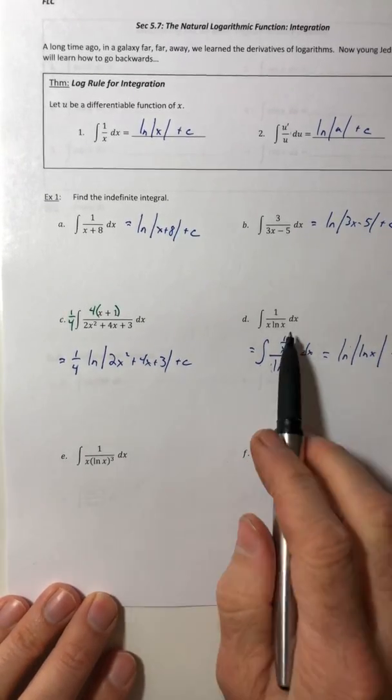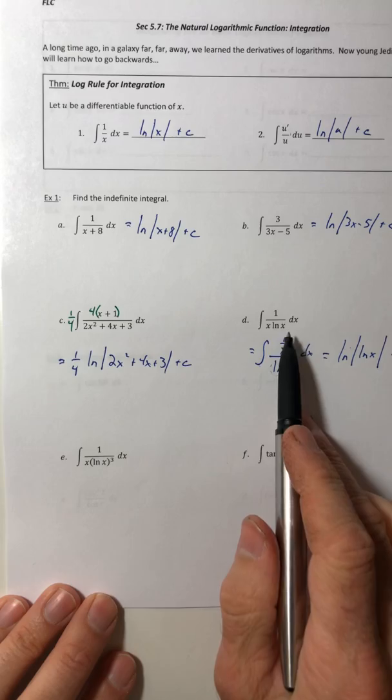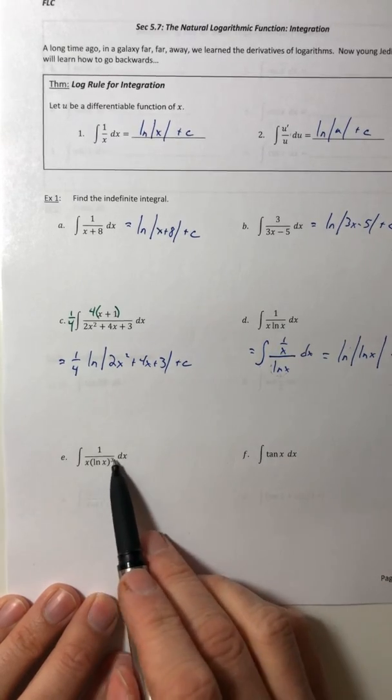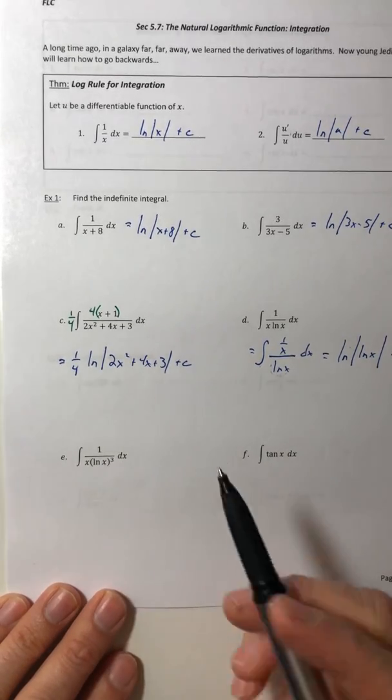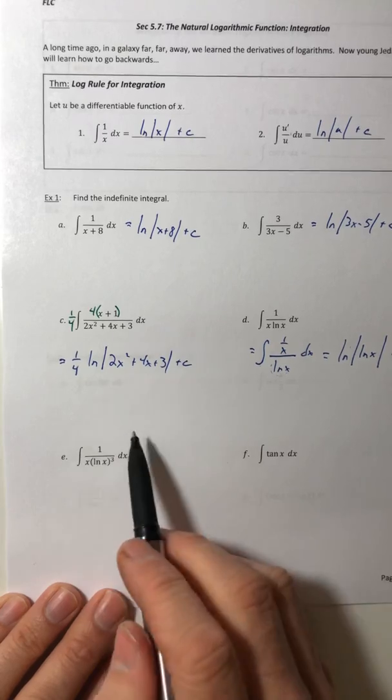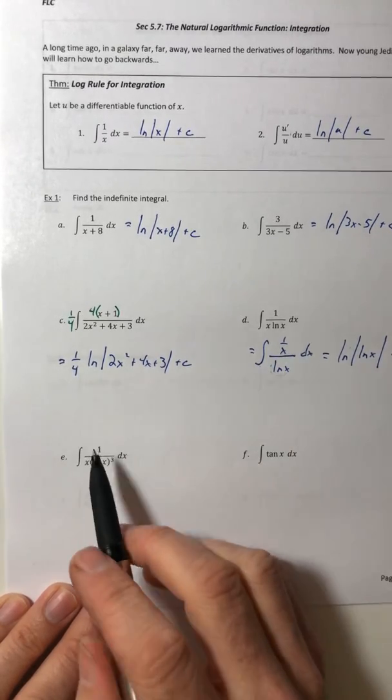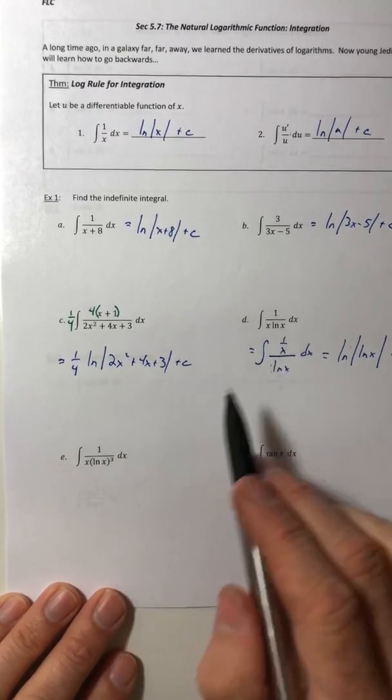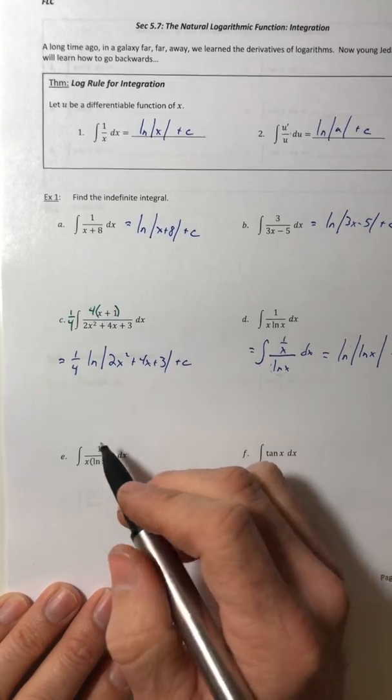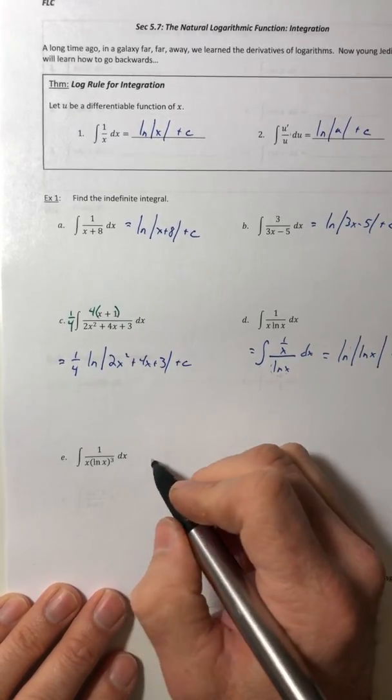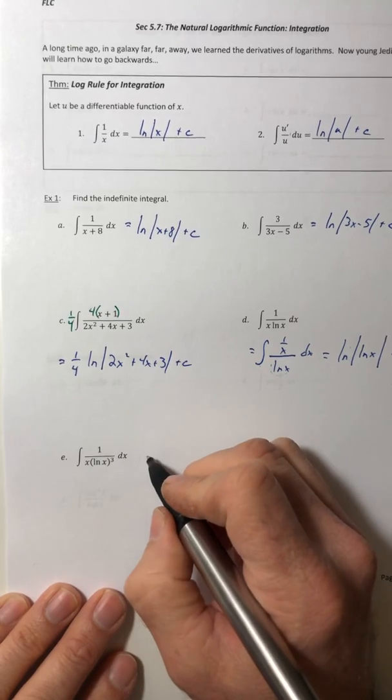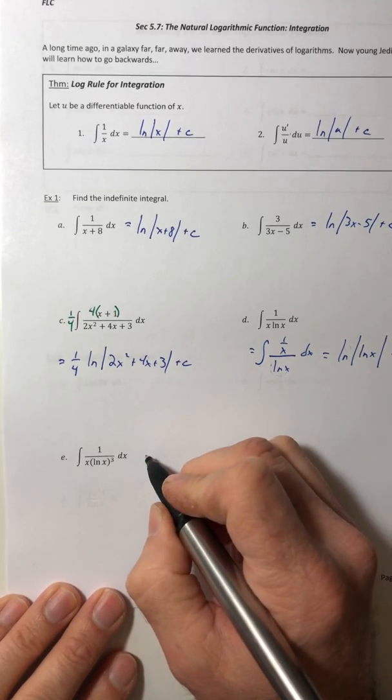All right. Part e, it's really similar to part d, but it's a little bit different. Now there's a power being involved on that ln of x. If I try to rewrite it the same way I did here, the derivative is no longer going to be the numerator. So what we're going to do instead is go back to like 5.5 and we're going to use a u substitution.